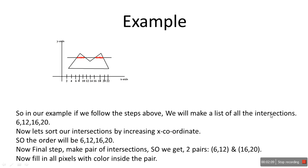Let's walk through an example. We list all the intersections: 6, 12, 16, 20. Now we sort the intersections by increasing x coordinate, so the order will be 6, 12, 16, 20 — already in increasing order. The final step is to make pairs of the intersections, giving us two pairs.